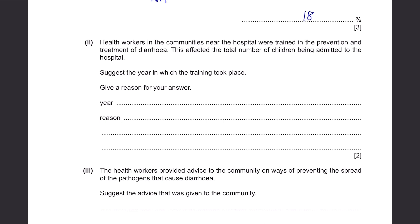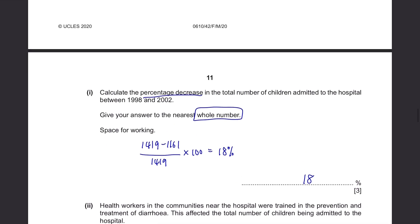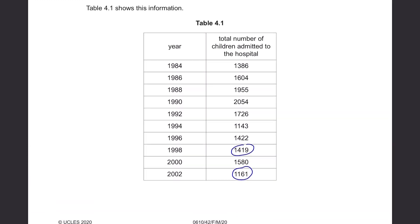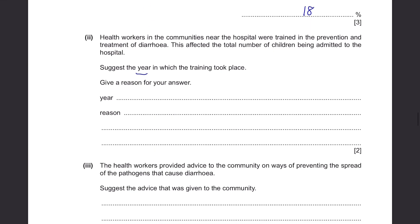Health workers in communities near the hospital were trained in the prevention and treatment of diarrhea. Suggest the year training took place and give a reason. You can suggest any year between 1990 and 1994, or 2000 to 2002, because you see a decrease in total children admitted. You cannot say 1996 or 1998 because numbers increased or didn't change. I'll say 1992 — the reason is that the number of children admitted decreases after this year.